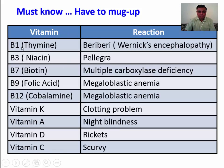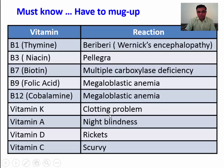This chart shows the vitamins and which diseases result from their deficiency. Thiamine deficiency produces beriberi, otherwise known as Wernicke's encephalopathy. Niacin deficiency produces pellagra. Biotin is used for all carboxylation reactions, so its deficiency leads to multiple carboxylase deficiency. Folic acid and cobalamin deficiency cause megaloblastic anemia. Vitamin K is used for clotting factor carboxylation, so its deficiency leads to a problem with clotting.